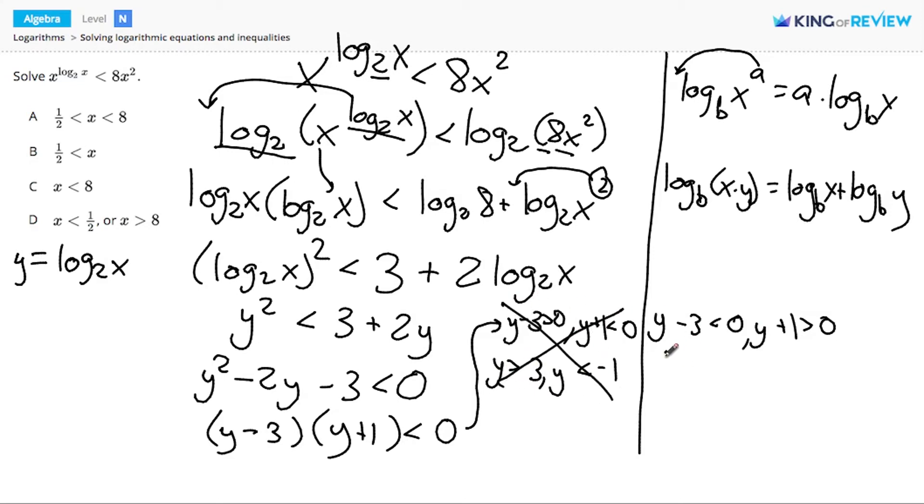On the right side, we have y is less than 3 and y is greater than negative 1. Now this works because if we look at a number line, we can certainly have numbers that are bigger than negative 1 and less than 3. And in fact, those are all the numbers where negative 1 is less than y, which is less than 3.